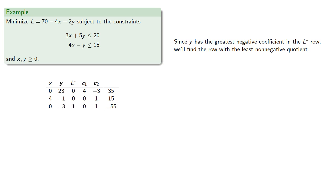Now since y has the greatest negative coefficient in the L star row, we'll find the row with the least non-negative quotient. This will be row 1, so we'll pivot using this row and the y column entry.